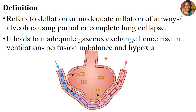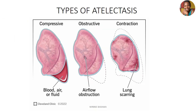But during atelectasis, what happens is the alveoli are not inflated the way we see in the photo. Instead, our alveoli have collapsed — they are no longer inflating or becoming enlarged to accommodate air. As a result, we don't get enough air in that space. We can have compressive, obstructive, and contraction atelectasis.